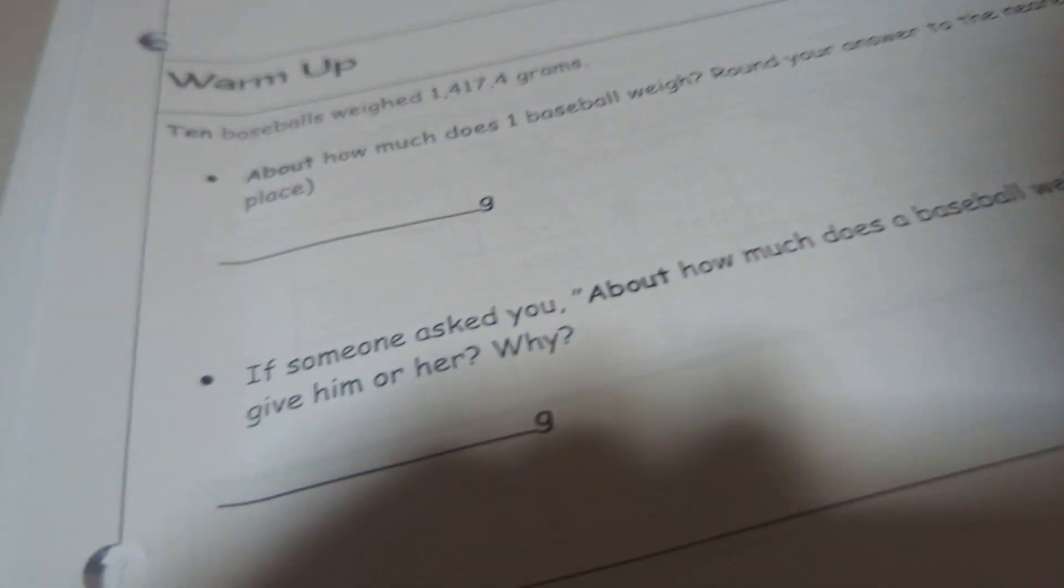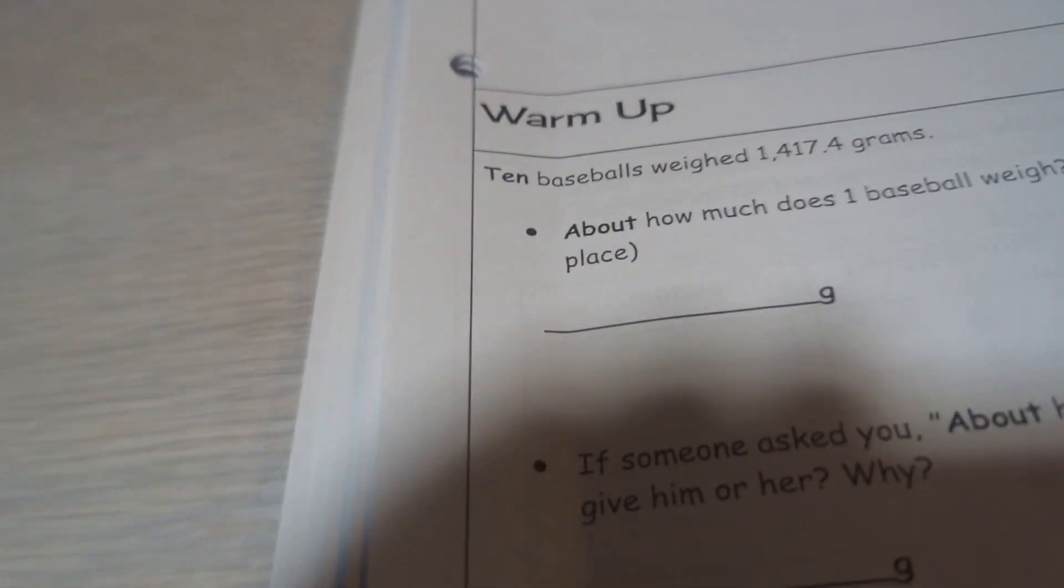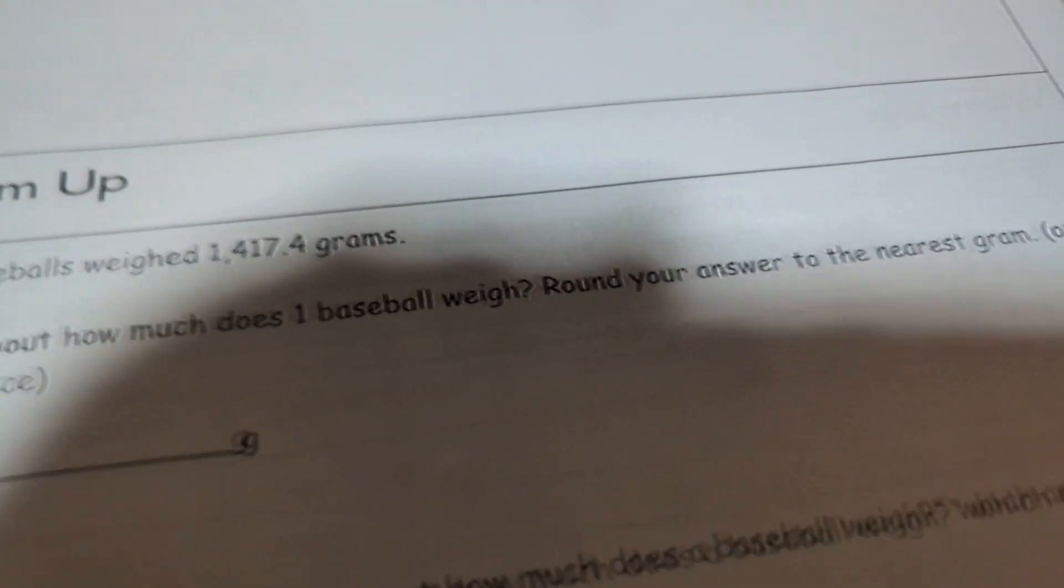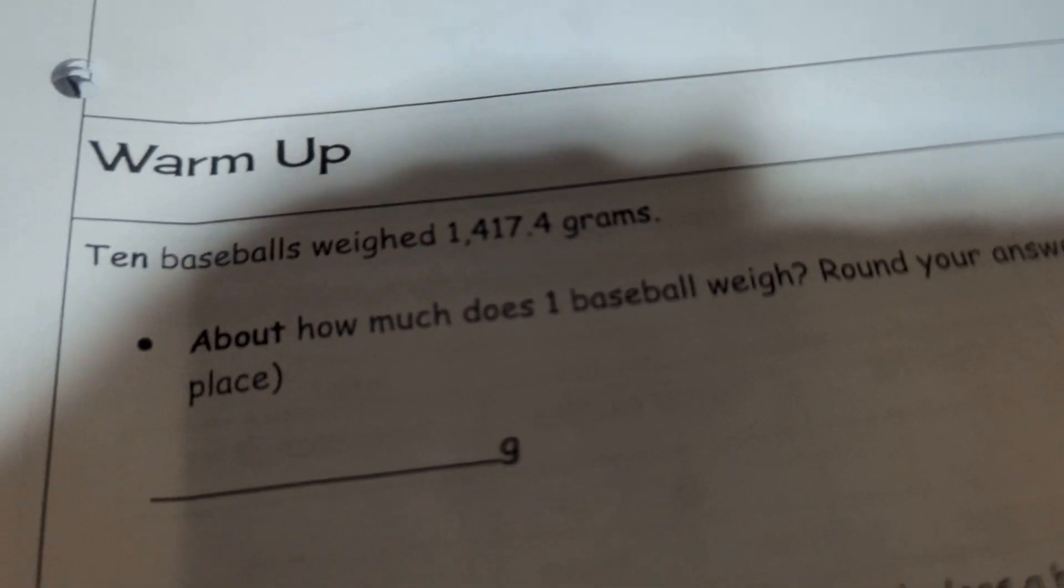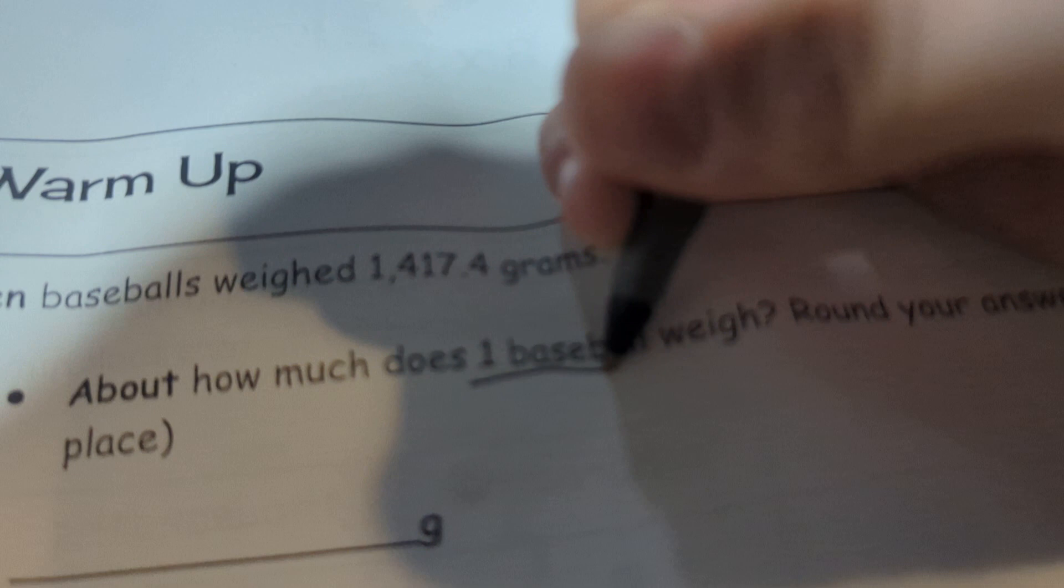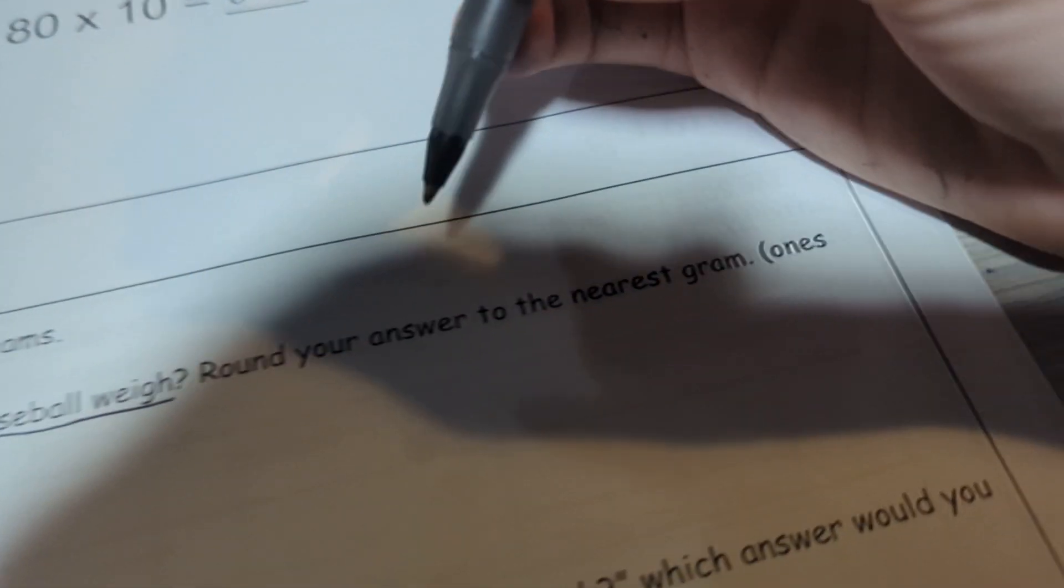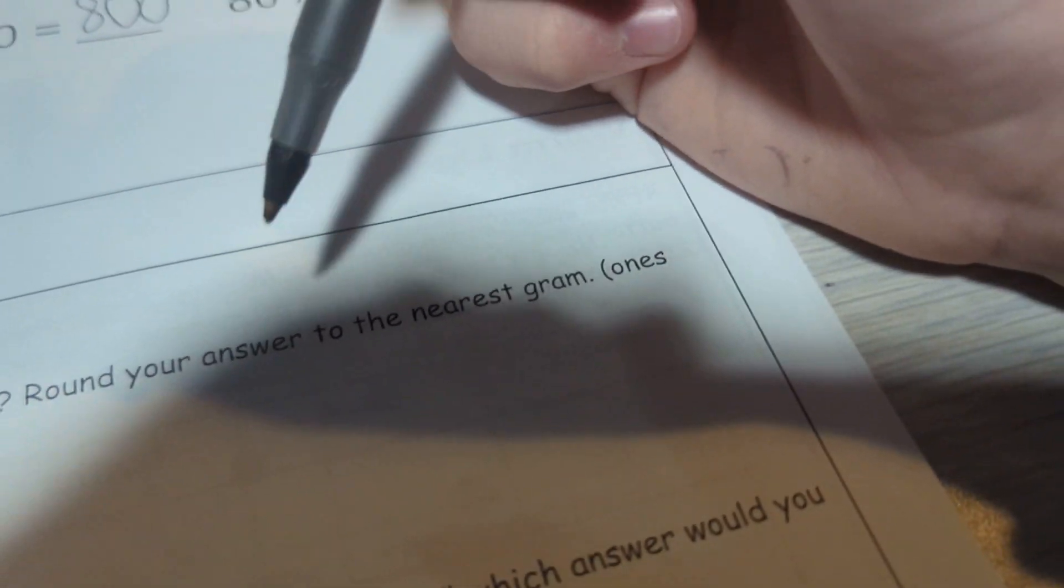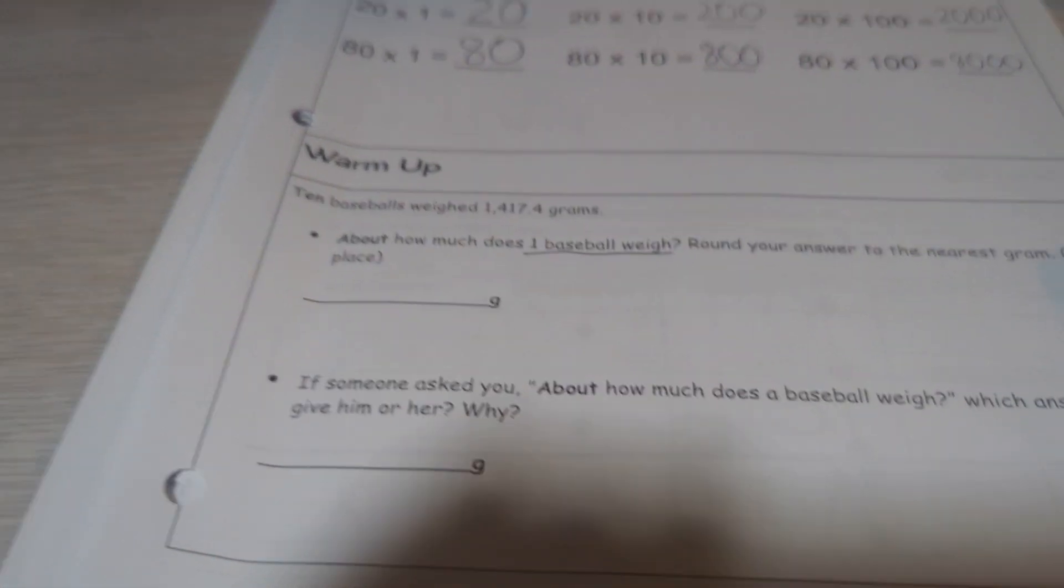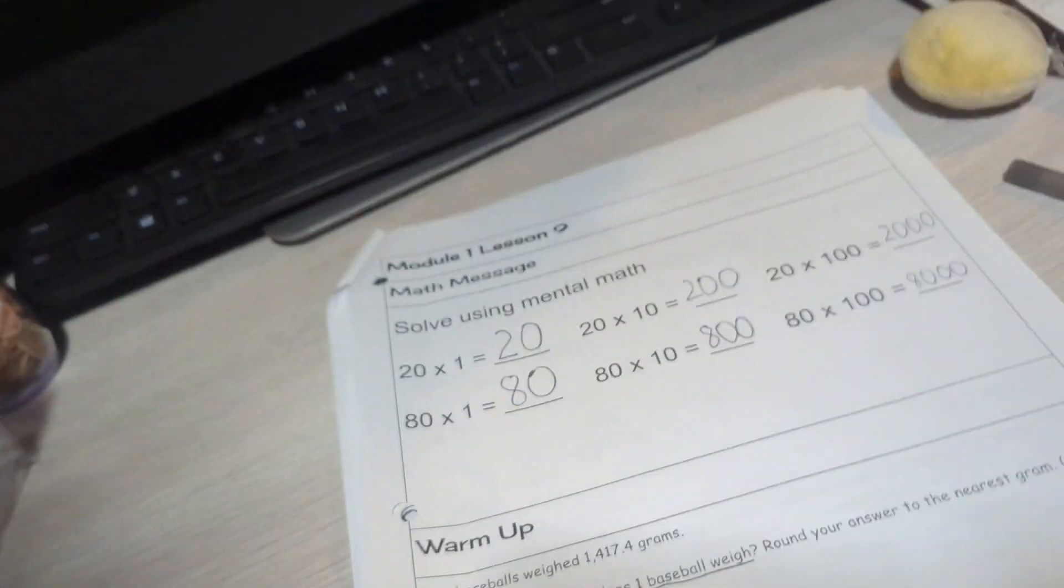Let's do the warm-up. 10 baseballs weighed 1417.4 grams. About how much does one baseball weigh? Round your answer to the nearest gram. So that means you're estimating. Do you know what estimating is? Yeah, it's like rounding.